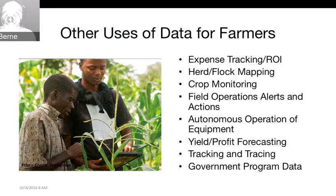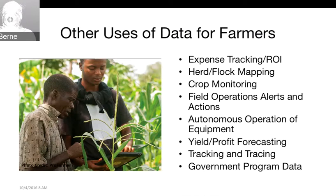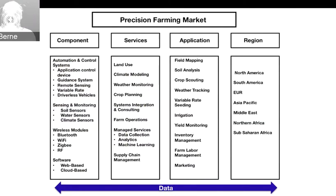There are also autonomous operations of equipment, yield and profit forecasting, tracking and tracing, and involvement in government programs which always want data. The industry lines this up across components: automation and control systems, sensors and monitors, wireless modules to move data, web- or cloud-based software, and services like best-use-of-land advice, climate modeling, and weather.